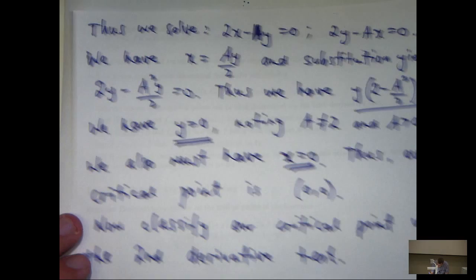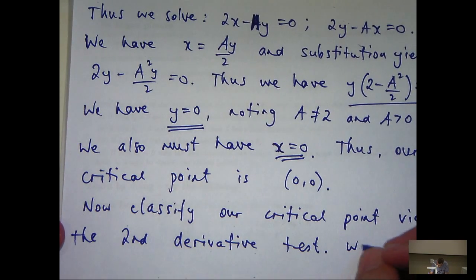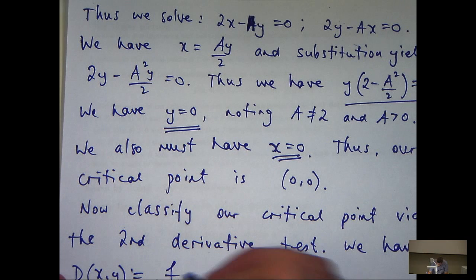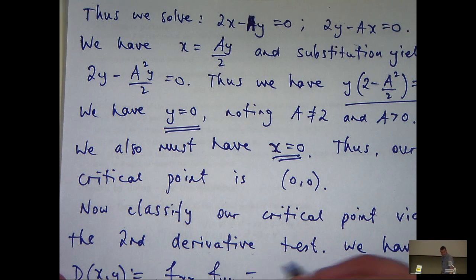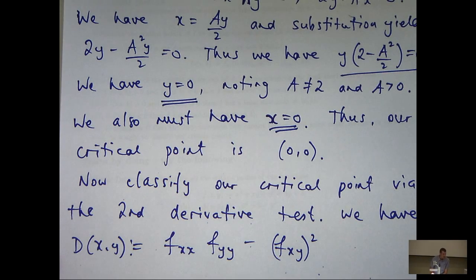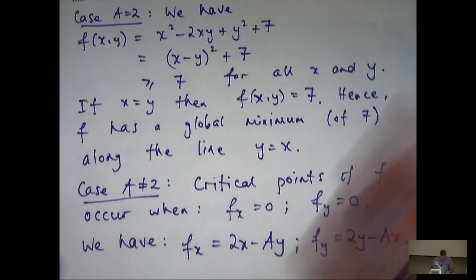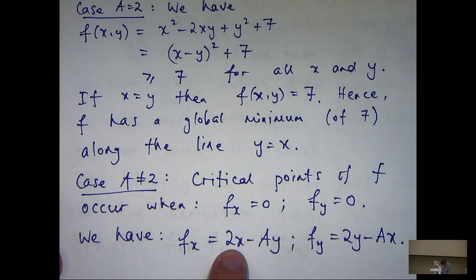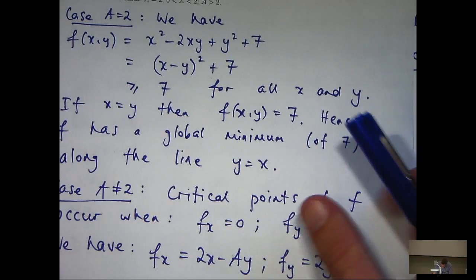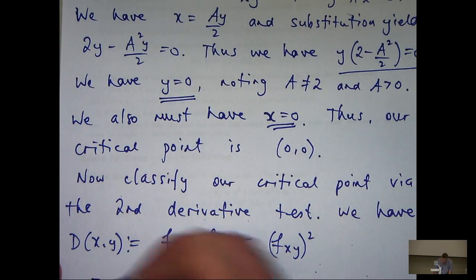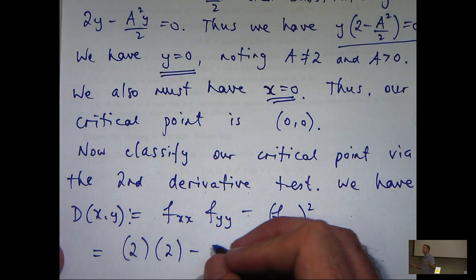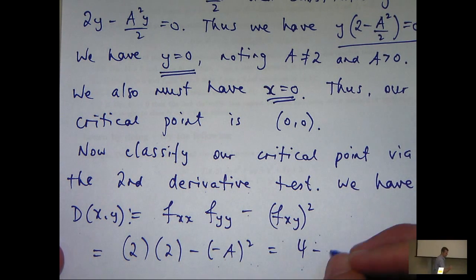Let's calculate this d here at a general point x, y. It involves these partial derivatives. Again, the subscripts mean, in this case, second order derivatives. We calculated the first order derivatives. They were here. f sub xx will just be 2. f sub yy will be 2. f sub xy will be minus a. Putting those into our d, we'll get the following. Over here, I'll get this.